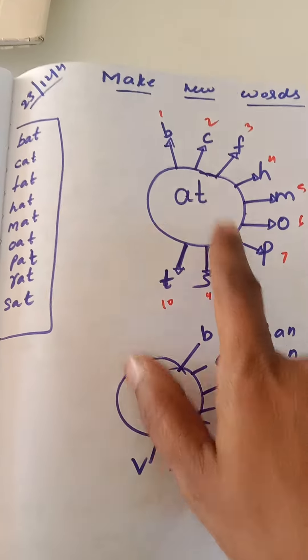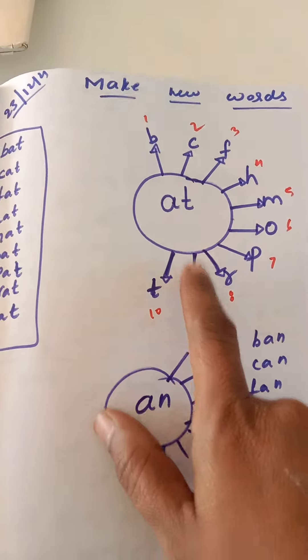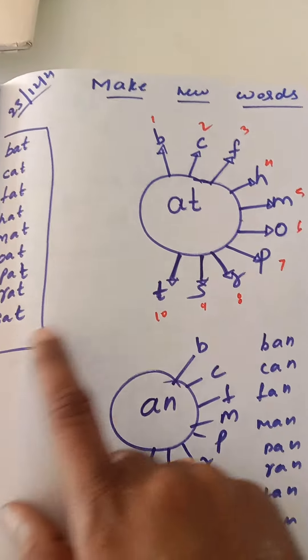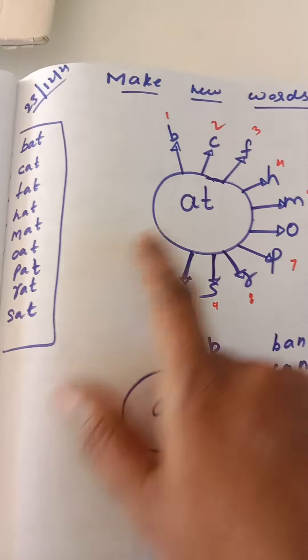R, A, T - Rat. Th, A, T - That. T, A, T - Tat.